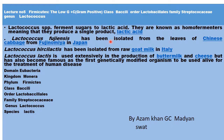The various species in Lactococcus include Lactococcus fugiensis, which has been isolated from the leaves of Chinese cabbage from Fugina in Japan. Another species, Lactococcus hereselactus, has been isolated from raw goat milk in Italy. The third and most important species is Lactococcus lactis, used extensively in the production of buttermilk and cheese, and also famous as the first genetically modified organism used alive for the treatment of human disease.